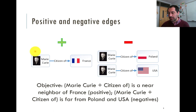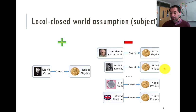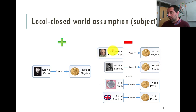The idea is that we would like Marie Curie and 'citizen of' to be a near neighbor of France, because it's positive. And then Marie Curie and 'citizen of' should be far away from Poland and USA and so on, because these are negatives. The most popular way to generate these negatives is the local closed world assumption: we take the subject and exchange that vertex for all other vertices in the graph. As you can see, some of them can be more plausible, and some are basically nonsensical, like polonium.